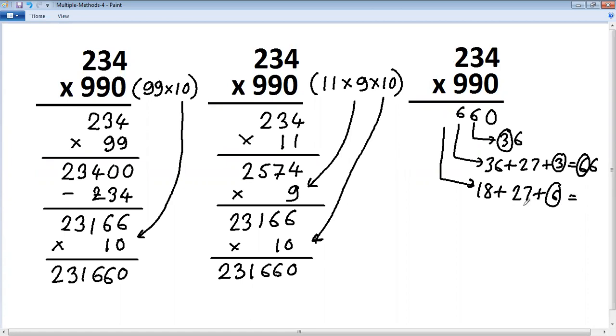So 1 out of that, 5 carry. And next step: 2 into 9 plus 5 carry, 18 plus 5 is 23. So 231660, same answer.